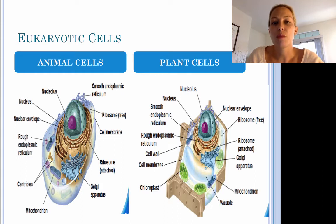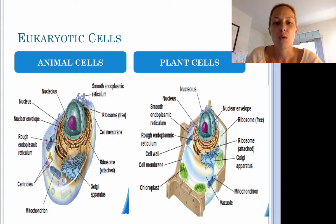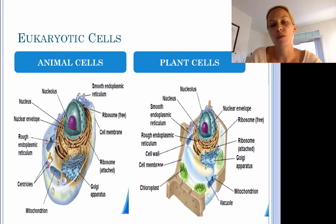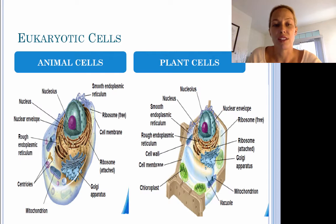Both animal cells and plant cells have three basic cell parts. They have a cell membrane or plasma membrane that surrounds the cell. Within that, they have cytoplasm with their organelles, and they both have a nucleus which is responsible for carrying the genetic information or DNA for the cell.